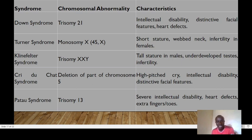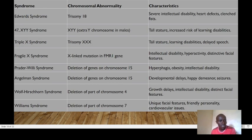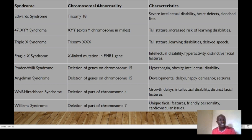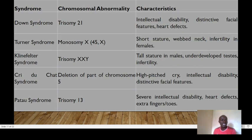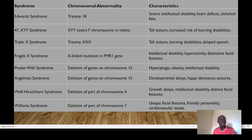Patau syndrome is a trisomy on chromosome 13, causing severe intellectual disability, heart defects, and extra digits. Edwards syndrome involves trisomy on chromosome 18, causing severe intellectual disability, heart defects, and clenched fists. The 47,XYY syndrome features an extra Y chromosome — distinct from Klinefelter's XXY — and is associated with tall stature and increased risk of learning disability.